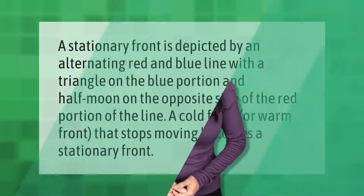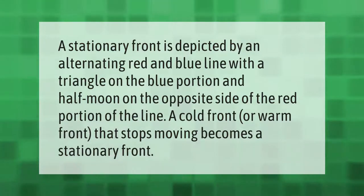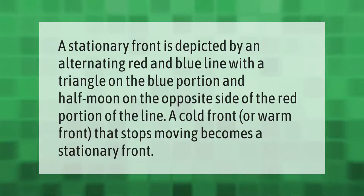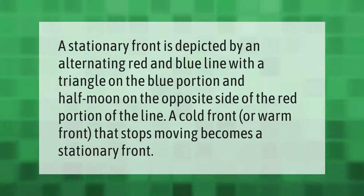A stationary front is depicted by an alternating red and blue line, with a triangle on the blue portion and a half moon on the opposite side of the red portion of the line. A cold front or warm front that stops moving becomes a stationary front.